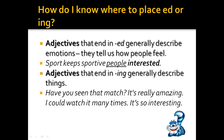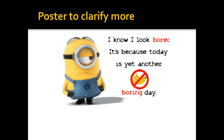But adjectives that end in -ing generally describe things. Have you seen that match? It's really amazing! Why 'amazing'? Because I'm linking it back to the match — the match is a thing, so the adjective takes -ing. 'I could watch it many times, it's so interesting.' What is interesting? The thing that I'm watching.